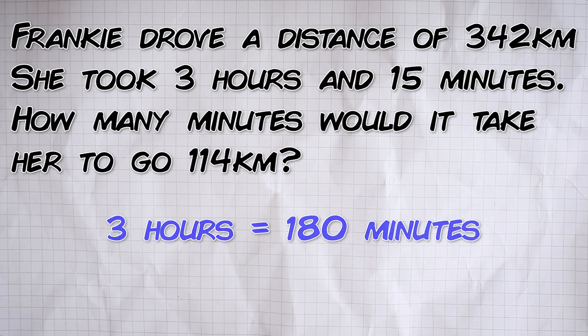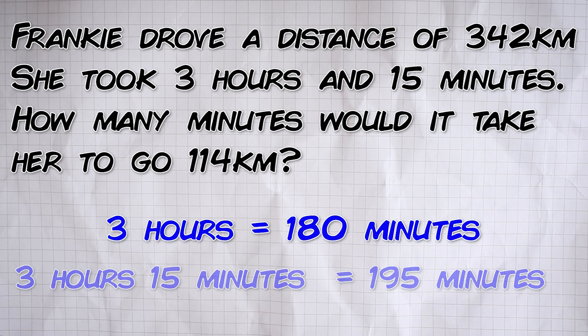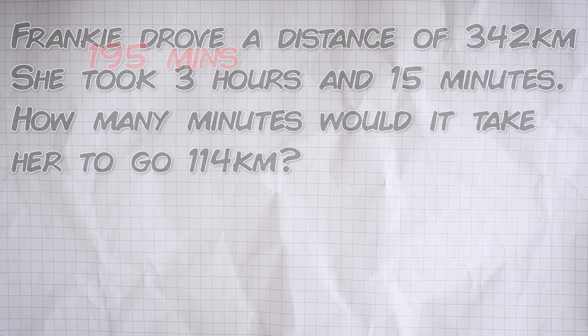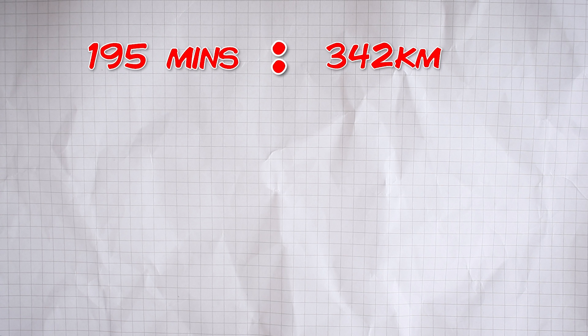So, the first thing I would do is change that 3 hours 15 minutes into minutes. There are 60 minutes in an hour, so 3 hours will be 3 times 60 which is 180 and then add on a 15 and we have 195 minutes. So, she travels 342 kilometres in 195 minutes. I'll put the time on the left-hand side and the distance on the right-hand side.